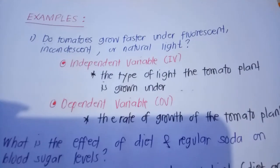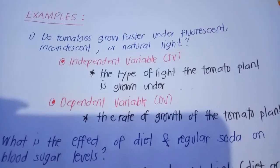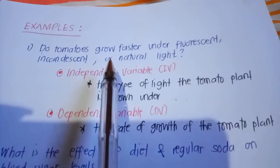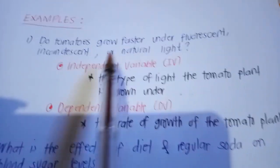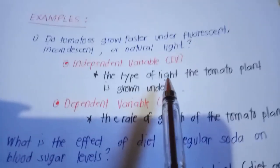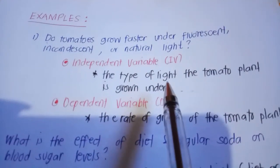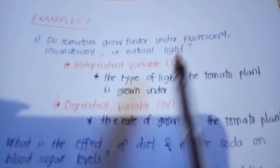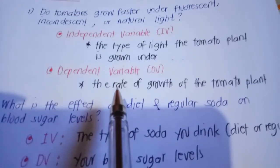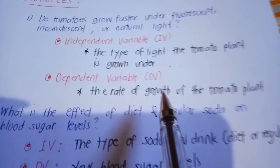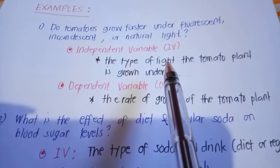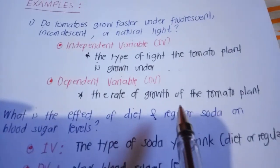Let me give you examples. For example: do tomatoes grow faster under fluorescent, incandescent, or natural light? Our independent variable is the type of light that the tomato plant is grown under — fluorescent, incandescent, or natural light. Our dependent variable is the rate of growth of the tomato plant. Which of these three types of lights would allow a faster rate of growth?